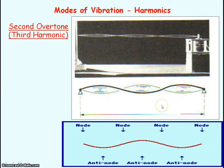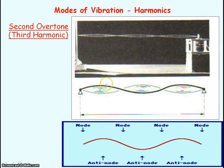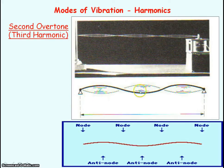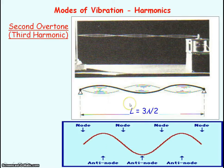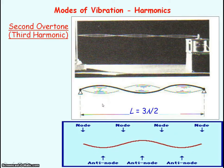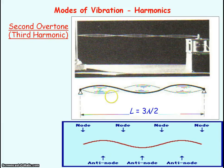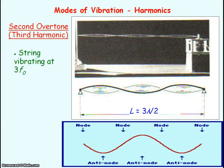The third harmonic for a stretched string has three loops, and the length of the string represents one and a half wavelengths. Compared to the first harmonic, the wavelength is one third of the original, which means the string is vibrating at three times the fundamental frequency.